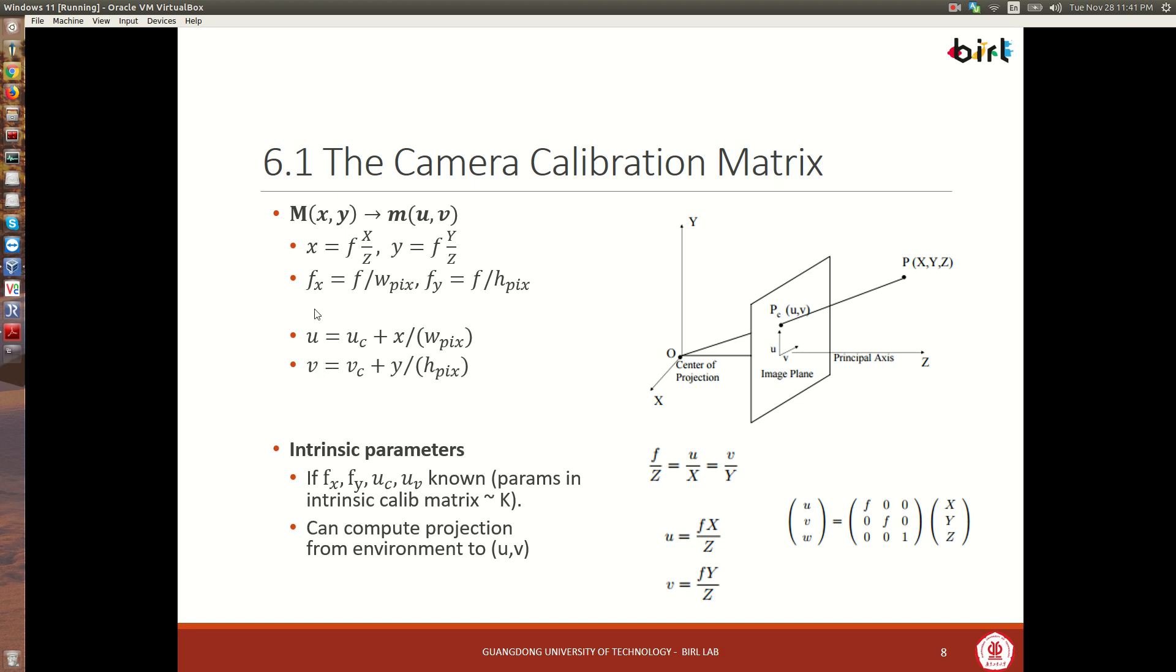You see the center of the image plus some offset, which is going to be given by whatever this metric distance is divided by the width of a pixel. So this will give us the offset in the image plane to get u and correspondingly to do v. So if we have f_x, f_y, u_c, and v_c, we have everything that we need to go from 3D to 2D. And so these are what are known the parameters in the intrinsic calibration matrix K. Again, look at the references for more details on the matrix. But it's also what the ROS system will be returning to us.